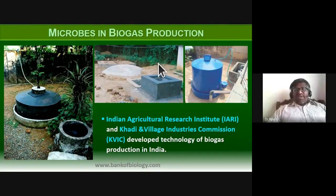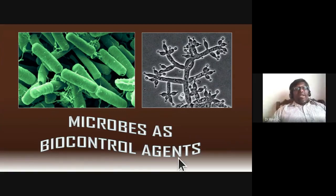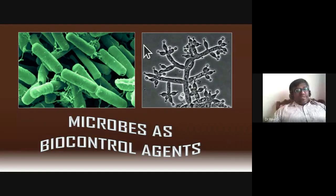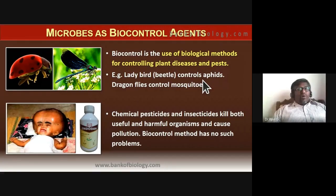We have studied microbes in household products, industry, sewage treatment, and production of biogas. Next, microbes as biocontrol agents — they are used to control pests or pathogens. Biocontrol implies the use of biological methods for controlling plant diseases and pests. Every pest has its own predator, and we can use those predators to bring the prey under control.